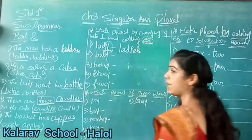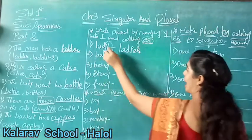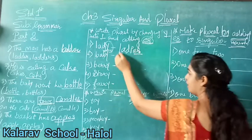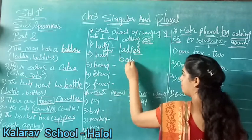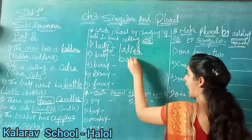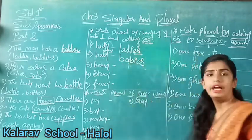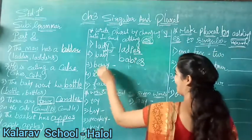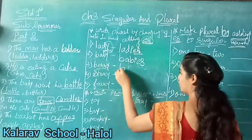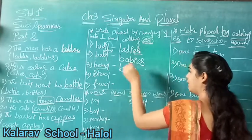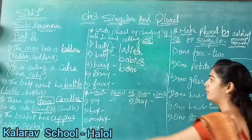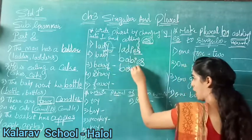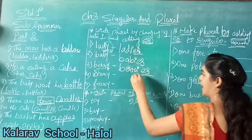Second number is baby. We have to remove Y, put I, and add ES. Our answer will be babies - I-E-S. Now the third number: instead of Y what will we put? I. Very good. So the answer is I-E-S.